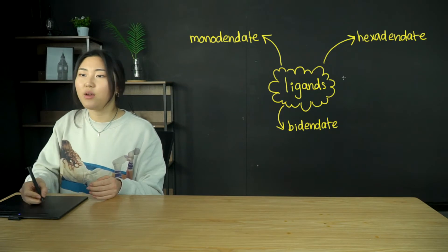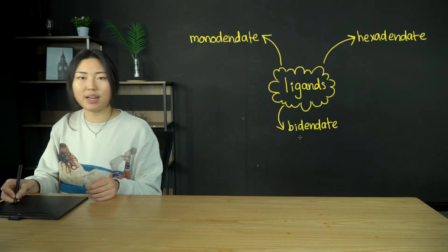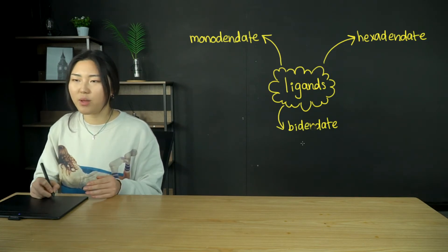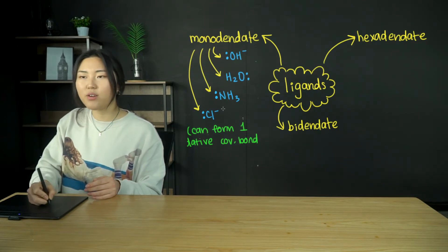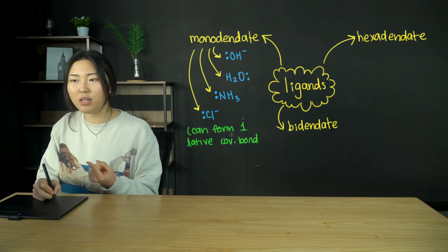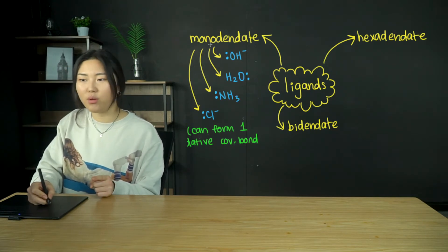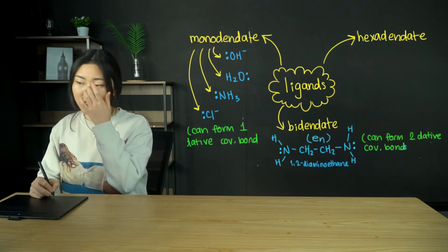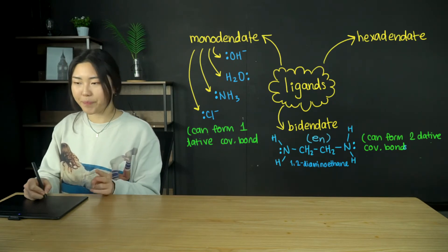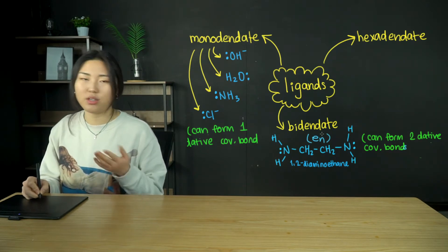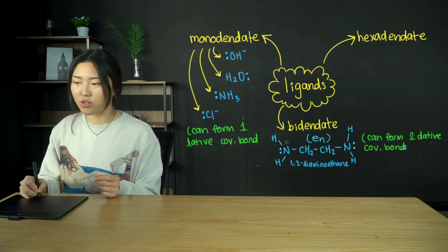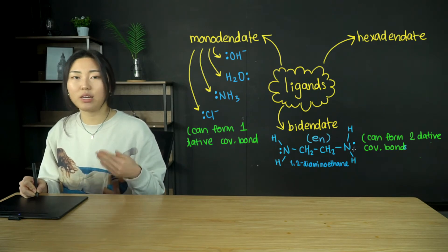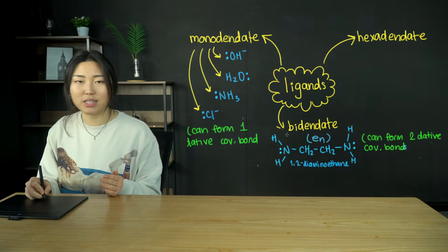There are different types of ligands. Monodentate ligands — such as hydroxide ions, water, ammonia, and chloride ions — can form one dative covalent bond per molecule. Bidentate ligands can form two dative covalent bonds per molecule. An example is 1,2-diaminoethane (abbreviated 'en'), which has two amine groups on either end that can both donate lone pairs to form dative covalent bonds with a central metal ion — hence it is a bidentate ligand.